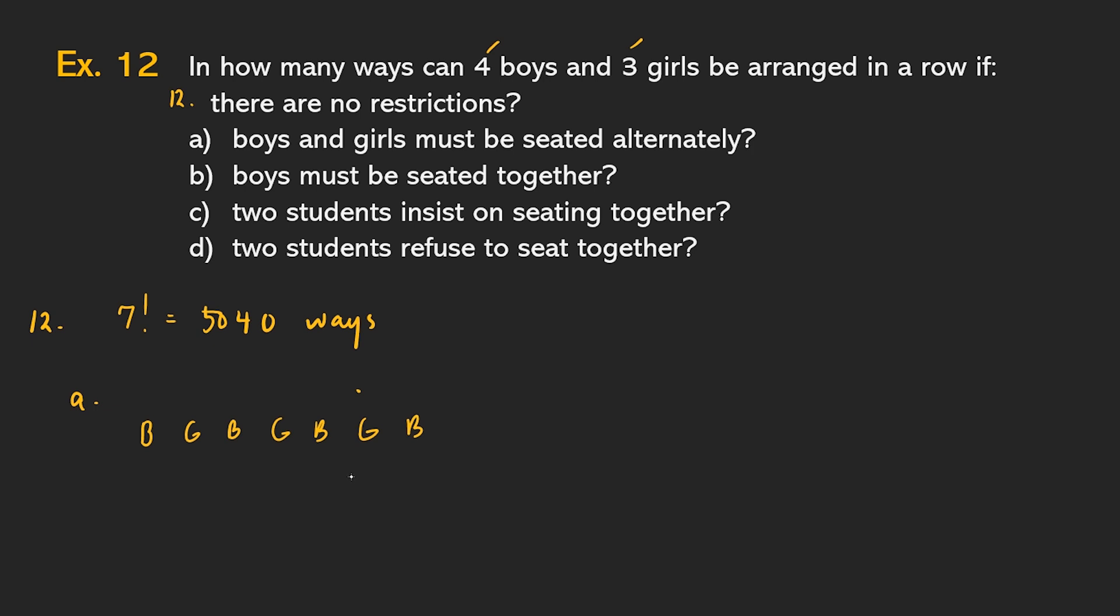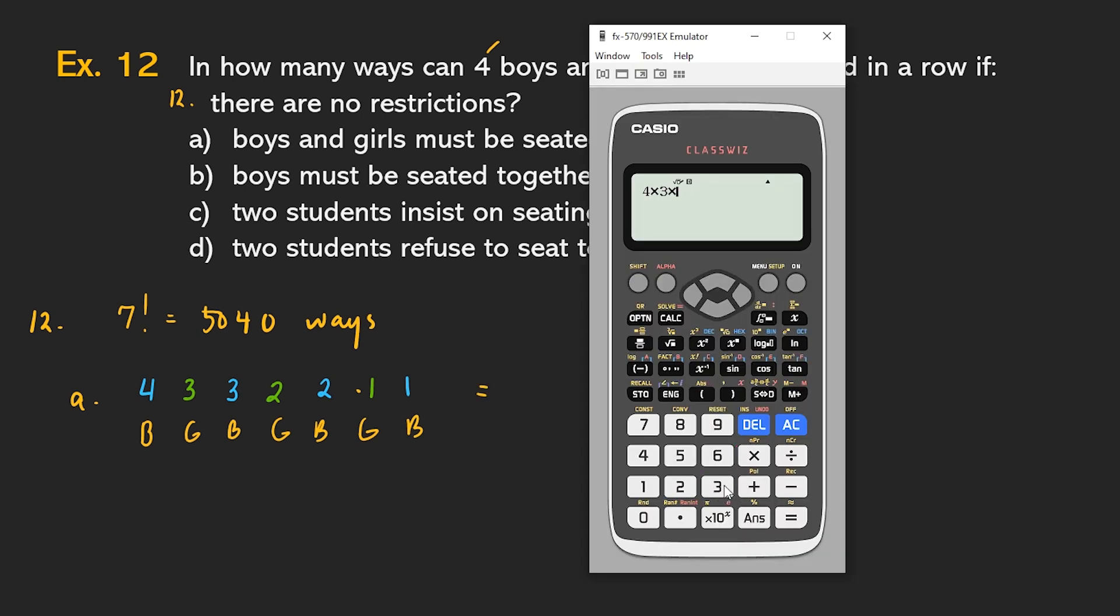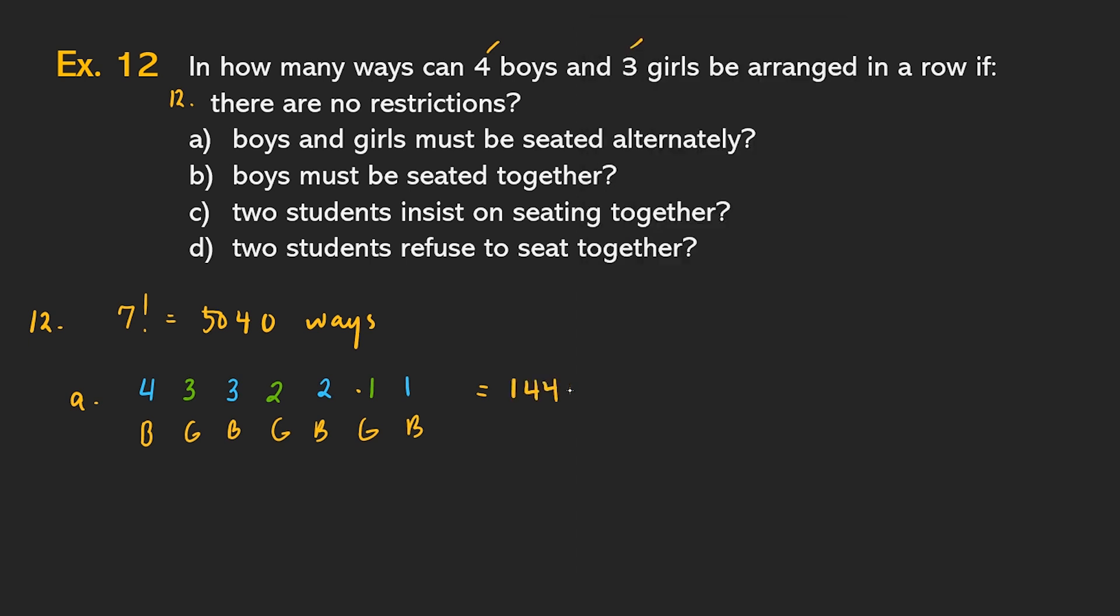So let's first arrange the boys. The boys can be seated in four. Siyempre, dahil naiupo mo na yung isang boy, three ka na lang dito sa isa, two, and then one. Yung girls naman, iupo natin yung first girl. We can do that in three ways. And then since naiupo mo na yung isa dito, we have two, and then one. So all you have to do is to multiply everyone. Four times three times three times two times two times one times one. If you multiply that, the answer is 144.